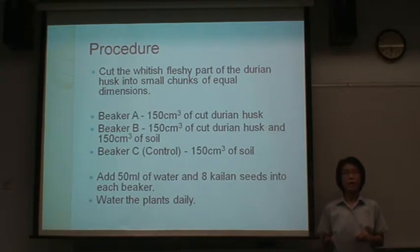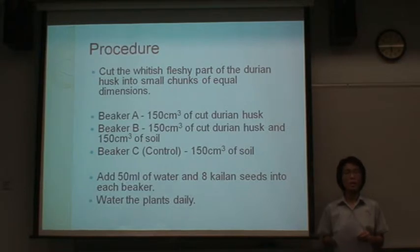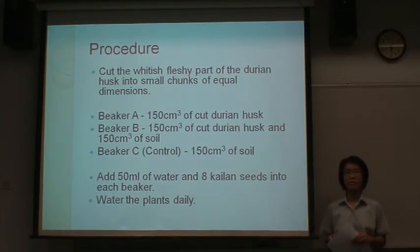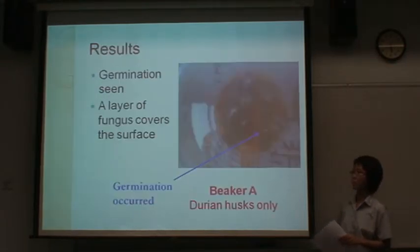Next, place 150 cm² of cut flesh into Beaker A, and 150 cm² of cut flesh and 150 cm² of soil into Beaker B. Thereafter, for each beaker add 50 mL of water and add Kailan seeds. The plants are watered daily.